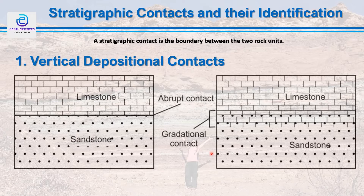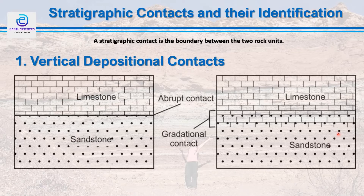For example, an underlying sandstone may slowly become calcareous with the addition of calcium carbonate content, and with increasing calcium carbonate may eventually become limestone. This change is not along a particular line but is extended for a considerable thickness of rock.